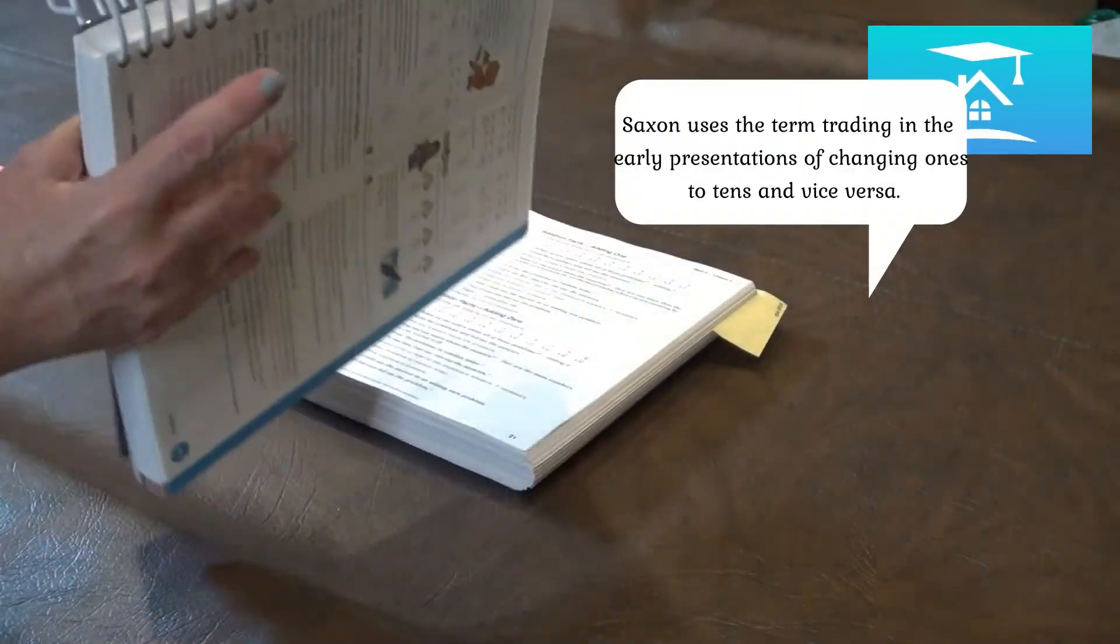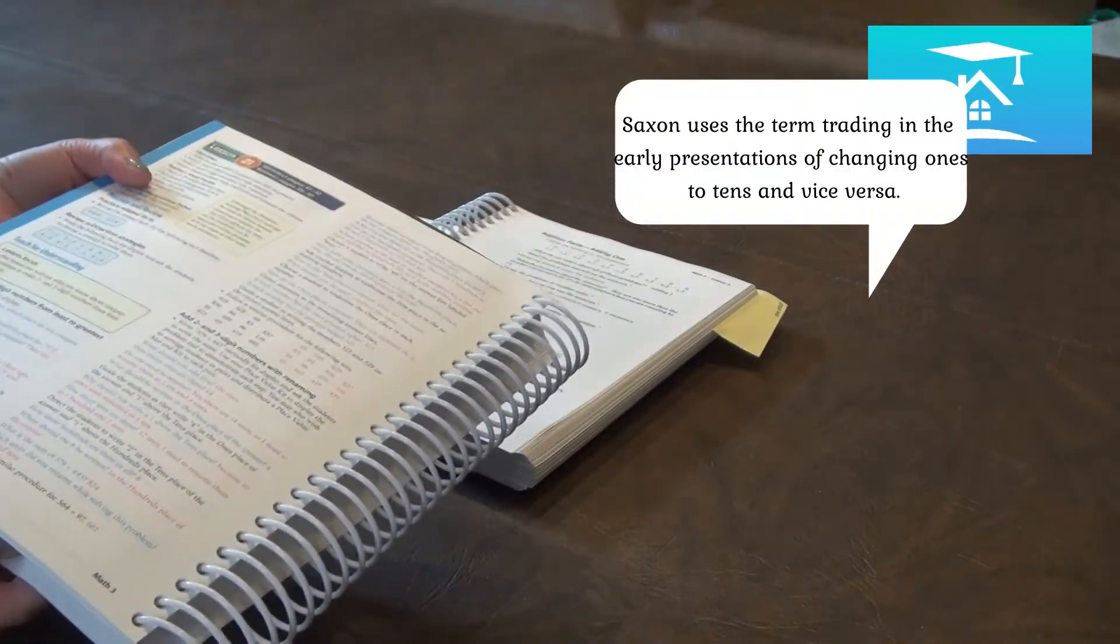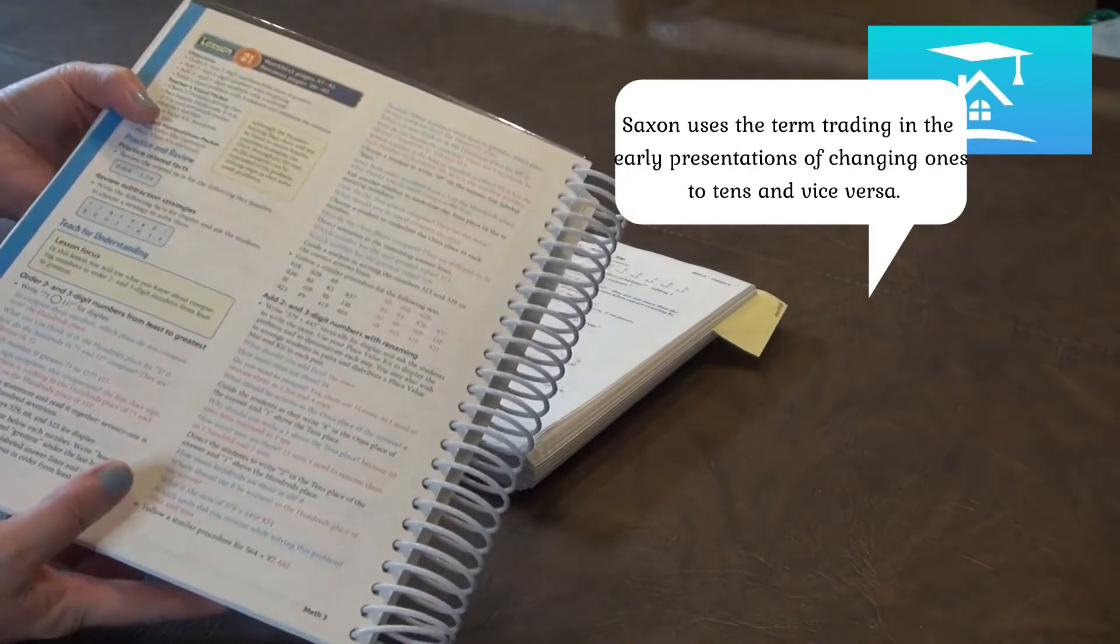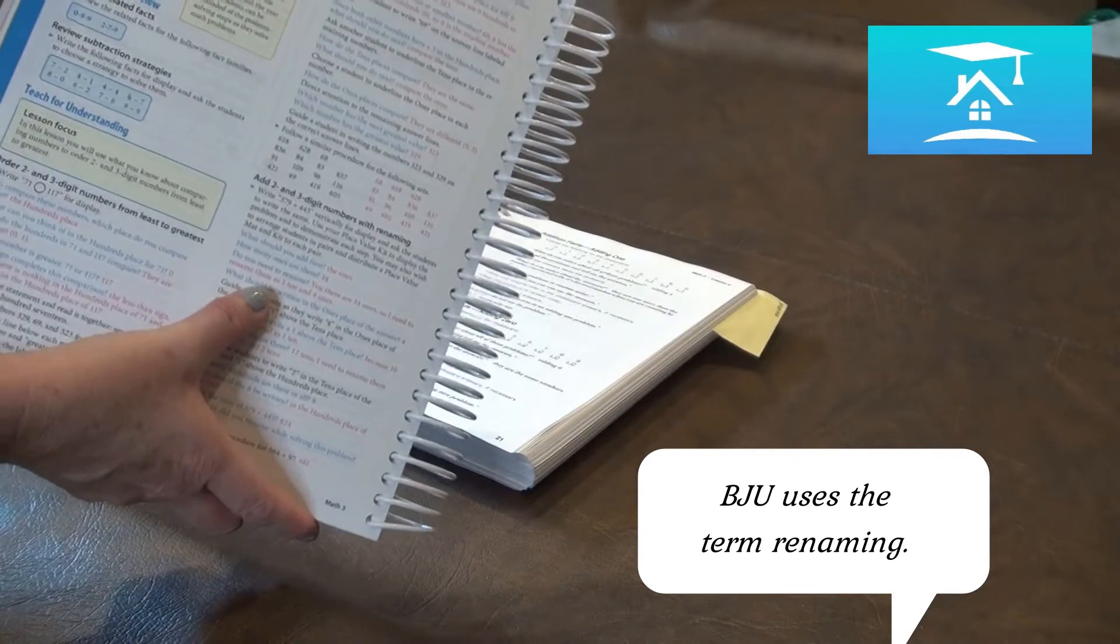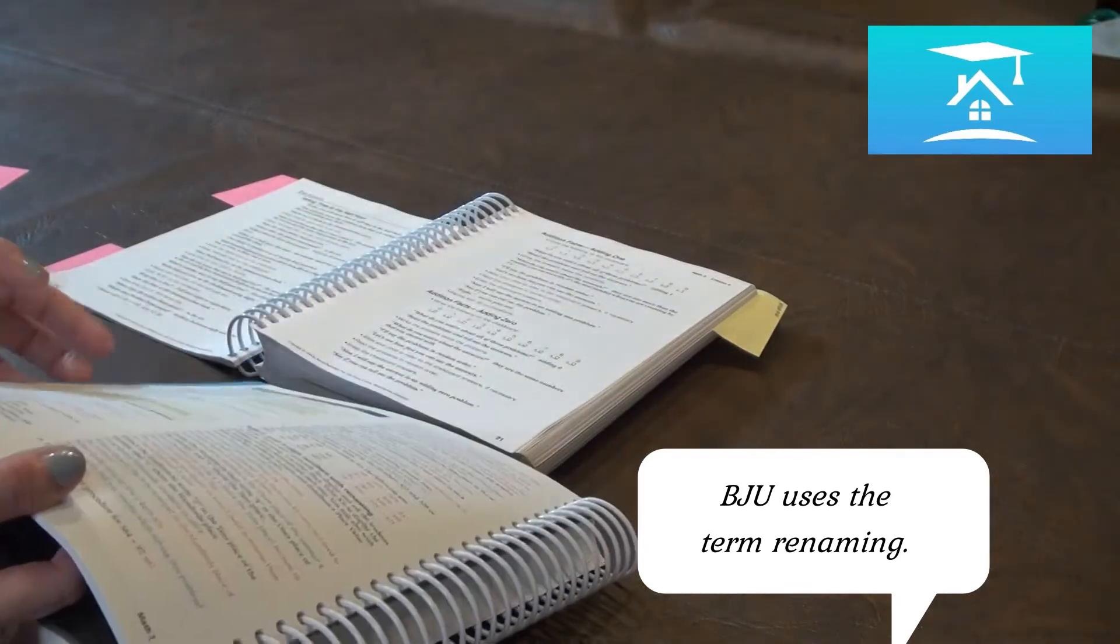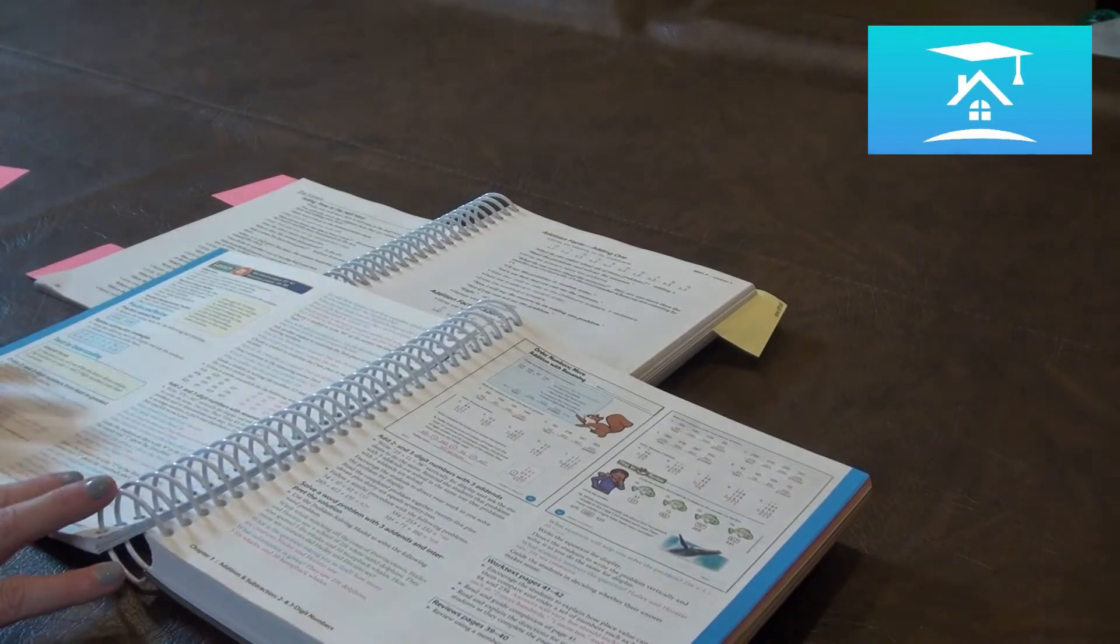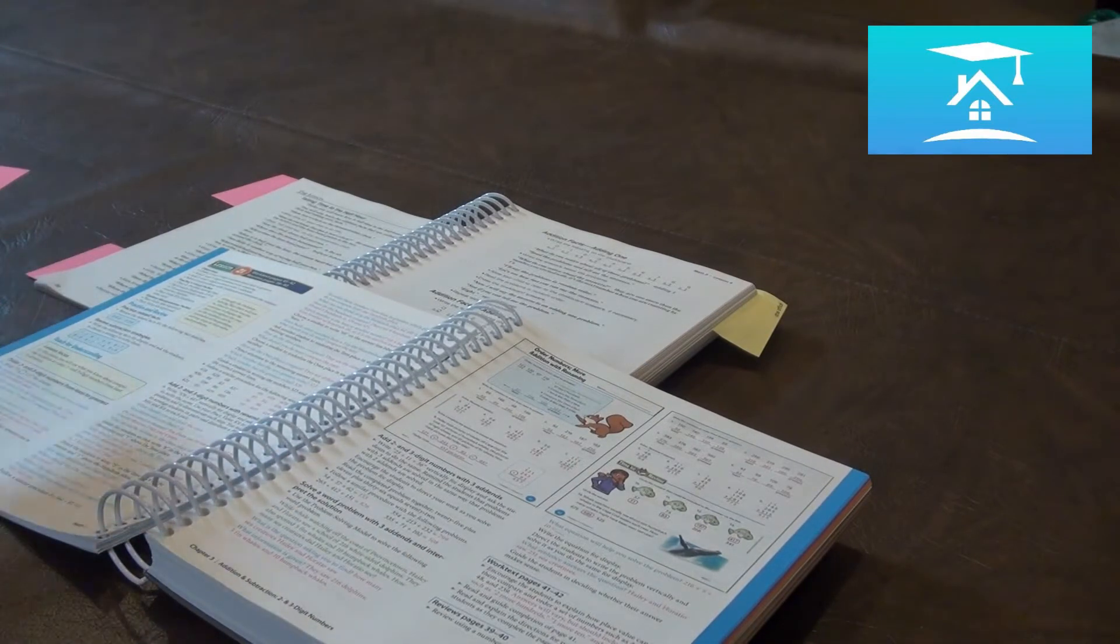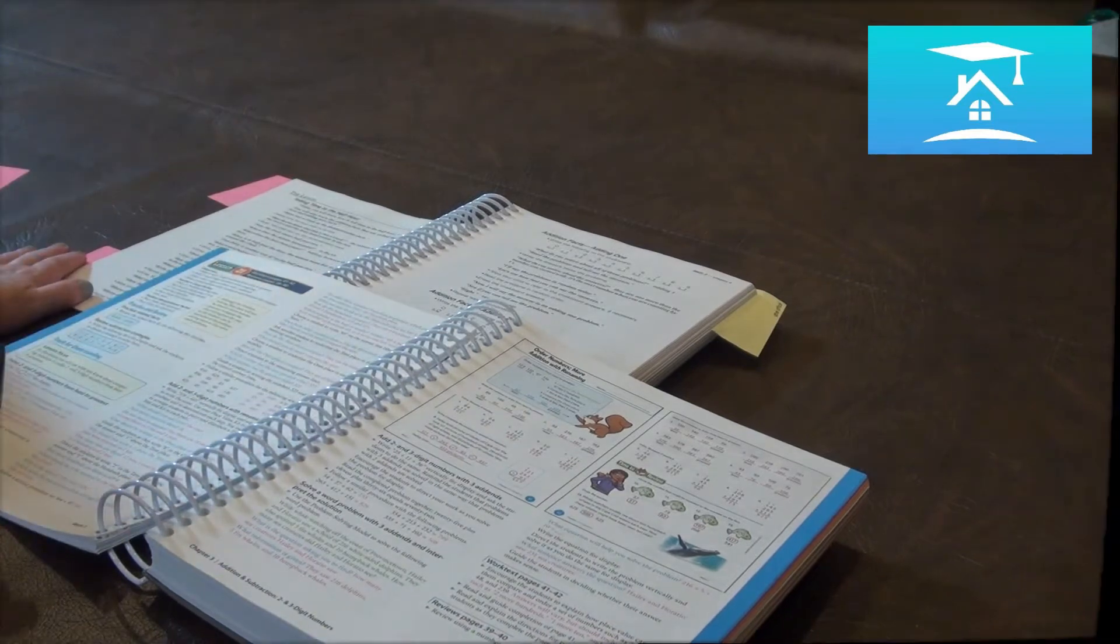So far, one minor difference, and this is just such a minor flaw. We have always used the term regrouping. Here in BJU, they seem to be using the term renaming for when you are borrowing or breaking up a group of tens or groups of hundreds for your math facts, but that is something minor and something we can easily adjust to.